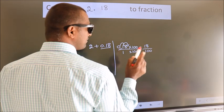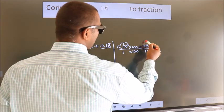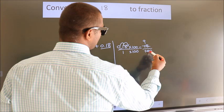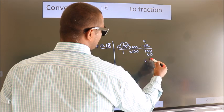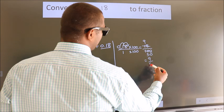Now I cancel with 2. Two 9s, two 5s, this 0 as it is down. So the fraction we got is 9 by 50.